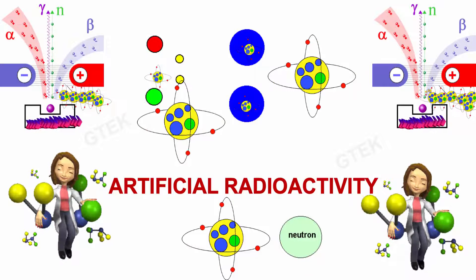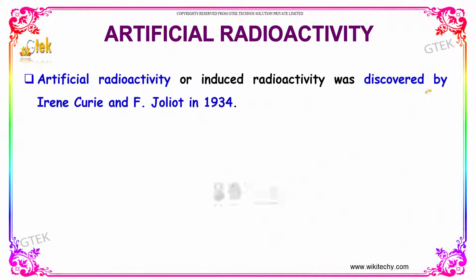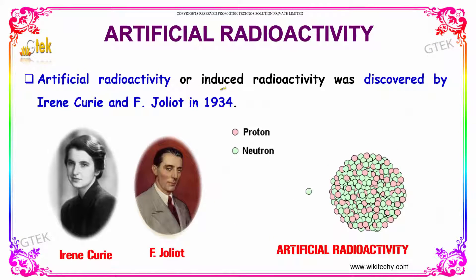Let's talk about artificial radioactivity. Artificial radioactivity or induced radioactivity was discovered by Irene Curie and F. Joliot in 1934.